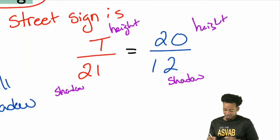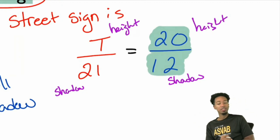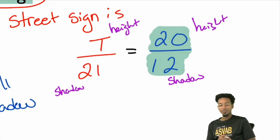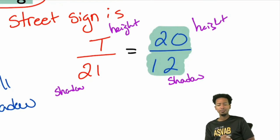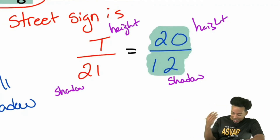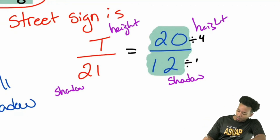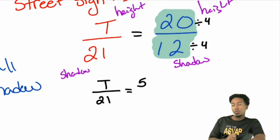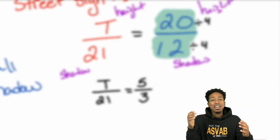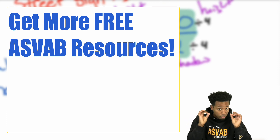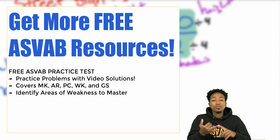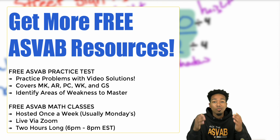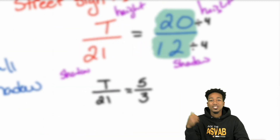Take a look — is it possible to simplify 20 over 12? Could we simplify that? We could. What are 20 and 12 both divisible by? 4. Is that going to give us an easier time? Let's find out. If I do 20 divided by 4 and 12 divided by 4, that gives us T over 21 equals 5 over 3. Just like this free video you're watching, I have more free materials: a free practice test with video solutions, and a free class on Zoom once a week, every single week for two hours. Sign up right now and I'll see you in the next class.